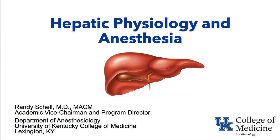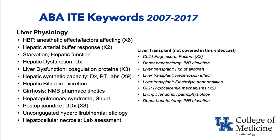Let's look at the ABA IT keywords over the last 10 years or so on this topic of liver physiology. These include hepatic blood flow and the factors that affect it, what happens during starvation to hepatic function, how we measure hepatic dysfunction — specifically albumin and prothrombin time, which help give us an idea of hepatic synthetic capacity — bilirubin and its excretion, cirrhosis, its effects on neuromuscular blocking agents, hepatopulmonary syndrome, postoperative jaundice, and damage to the liver and how we measure that.